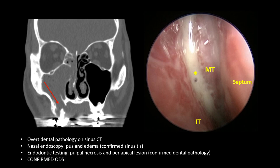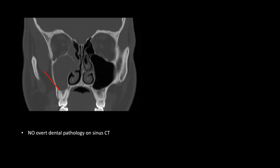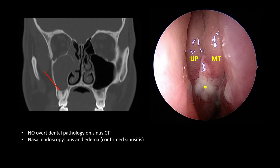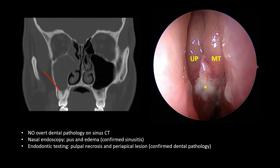That was a classic case — what about a more subtle one? Here's another case of right maxillary sinus opacification, but no overt dental pathology, just some missing periapical bone. You scope the patient and, once again, see pus and edema in the middle meatus, increasing your suspicion. You refer that patient to an endodontist who confirms pulpal necrosis on cold pulp testing, and periapical imaging reveals just a subtle, barely noticeable periapical lesion. Either way, you have confirmed sinusitis and dental pathology — another confirmed case of odontogenic sinusitis.